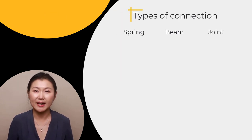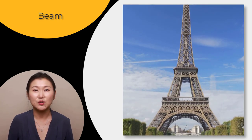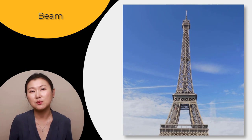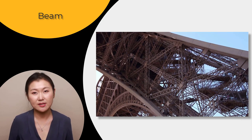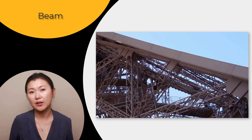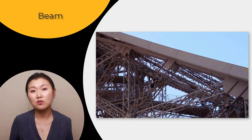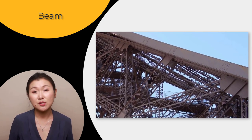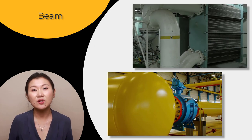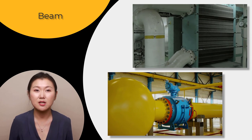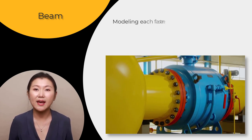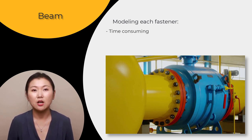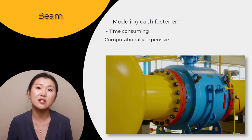Let's move on to discuss the next type of connection: the beam connection. The Eiffel Tower is one of the engineering masterpieces built by humans. Have you closely observed how the bars of the tower are connected with each other? You can see the rivets used to connect the bars — hundreds and thousands of connections utilized. Not limited to simple structures such as towers or bridges, you can find different types of fasteners in numerous assemblies. If you are trying to analyze such a system with many fasteners, modeling each fastener as a 3D solid is time-consuming from both the geometry and meshing point of view, and computationally expensive due to the creation of several contacts.